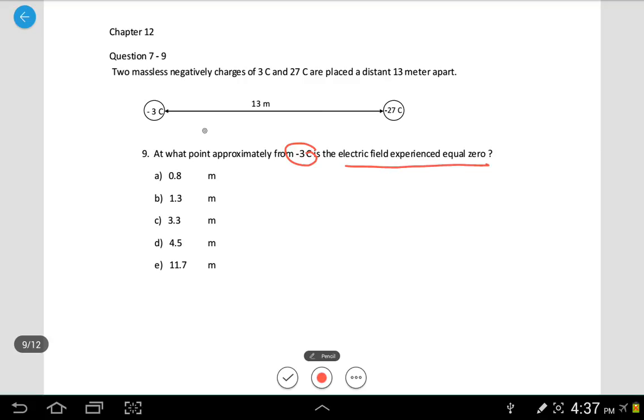So let's put an assumption that this is the point where the electric field will be zero. I'm saying that the distance from this to that point is x.